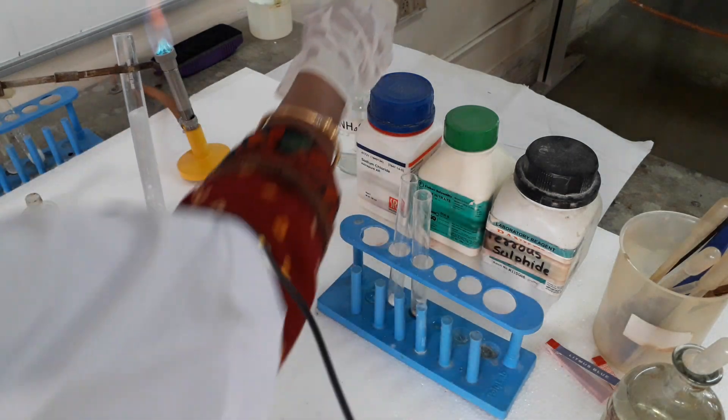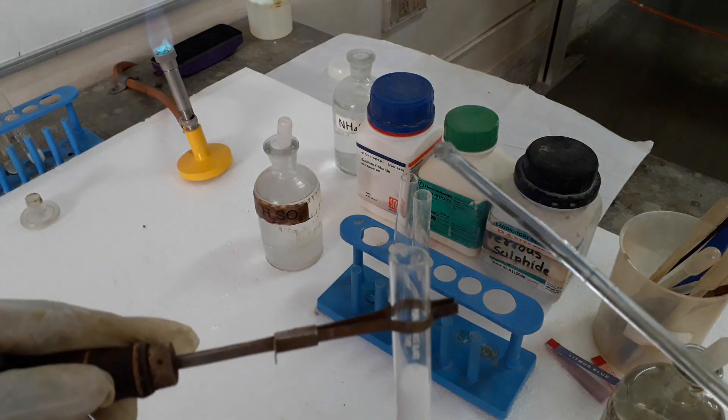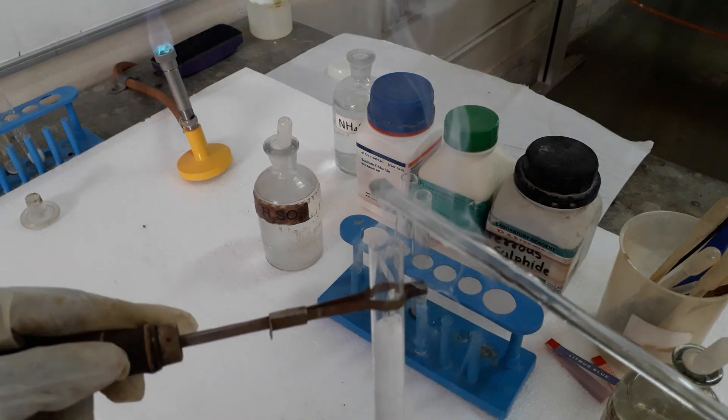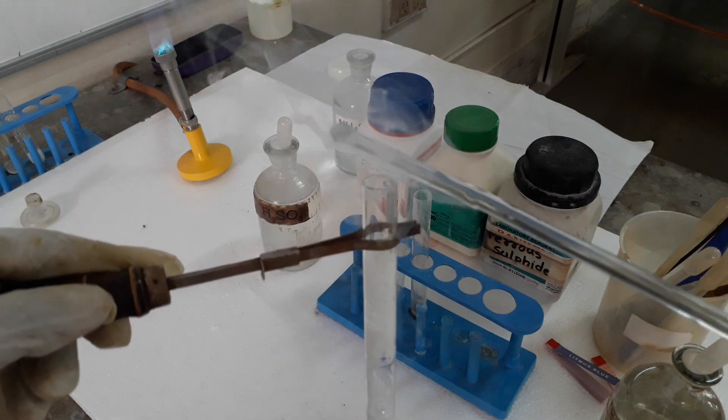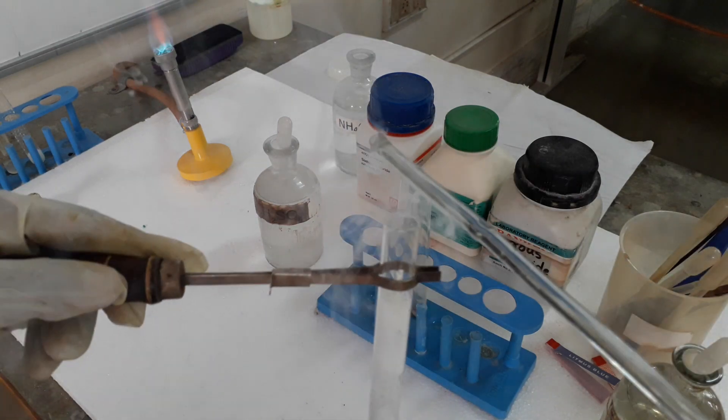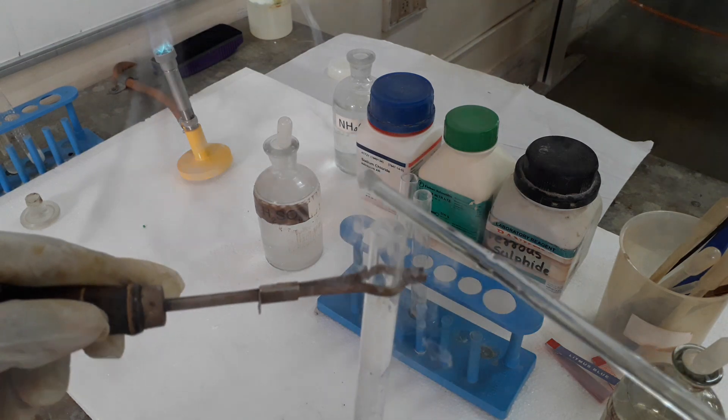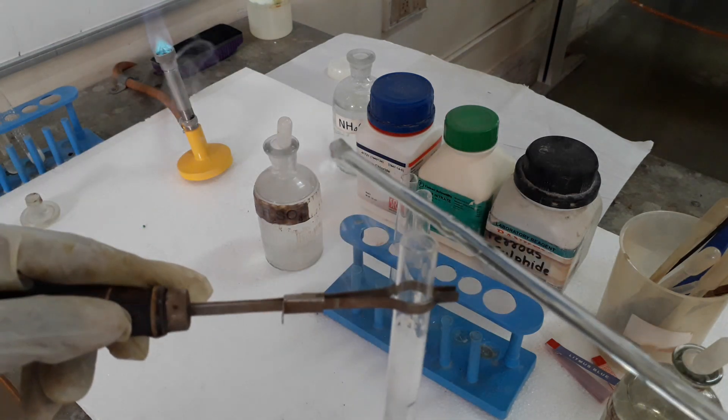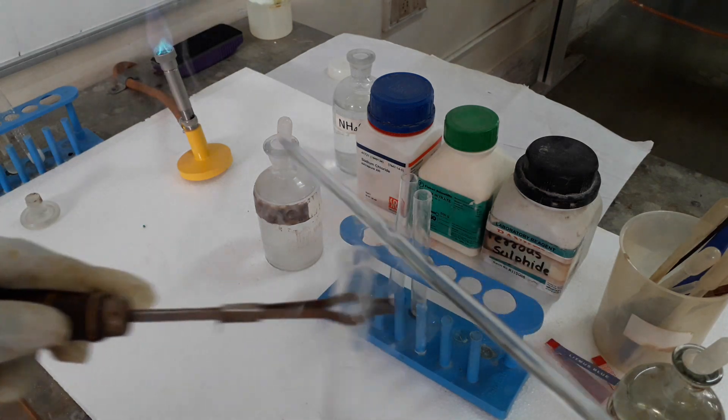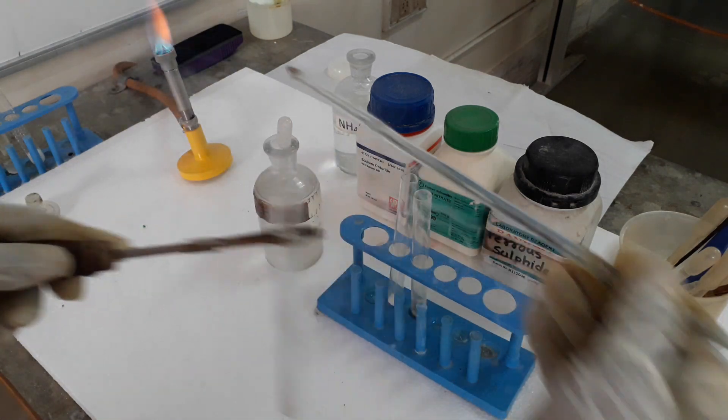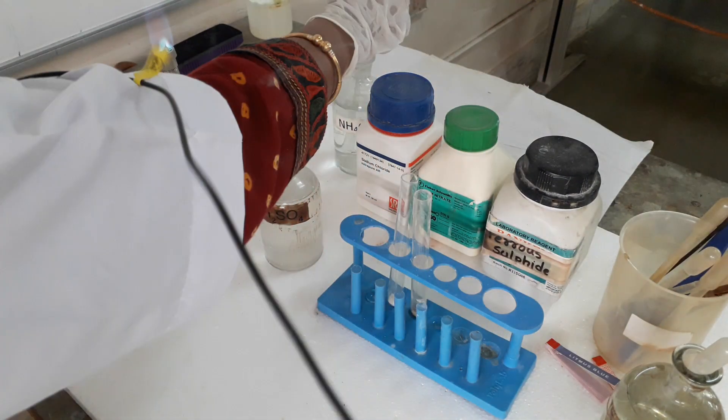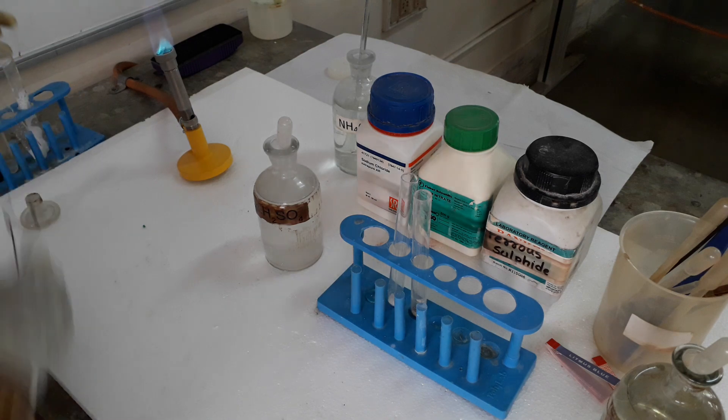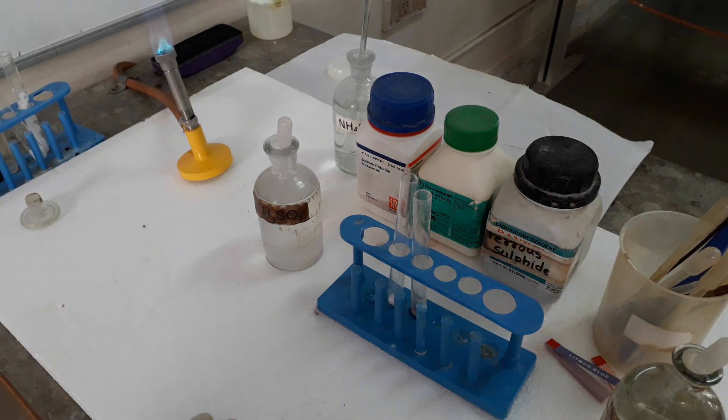Now how to confirm that the gas is HCl? I am bringing a rod dipped in ammonium hydroxide. We will see dense white fumes coming out from the test tube. These dense fumes are actually tiny solid particles of ammonium chloride, and this confirms that the salt has chloride as anion. So chloride anion we detected.